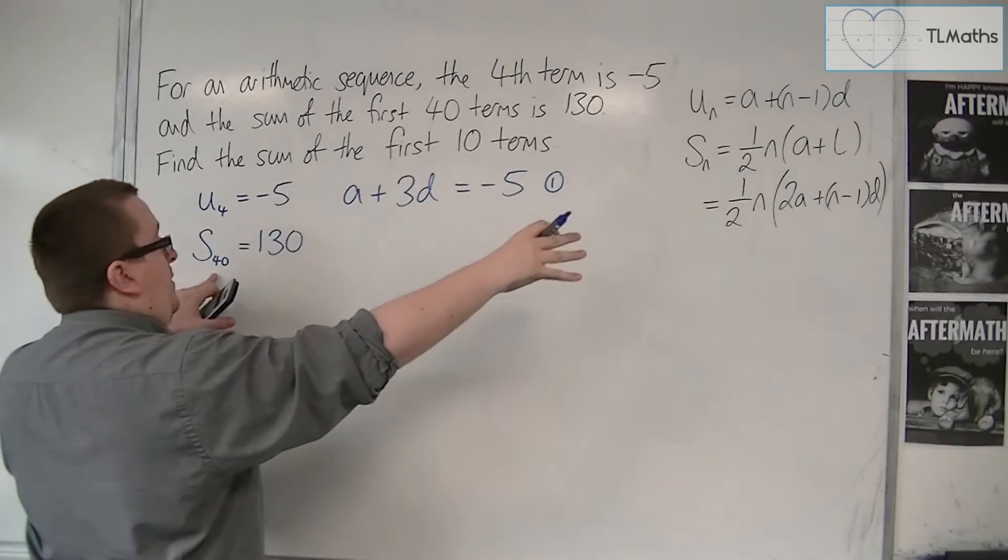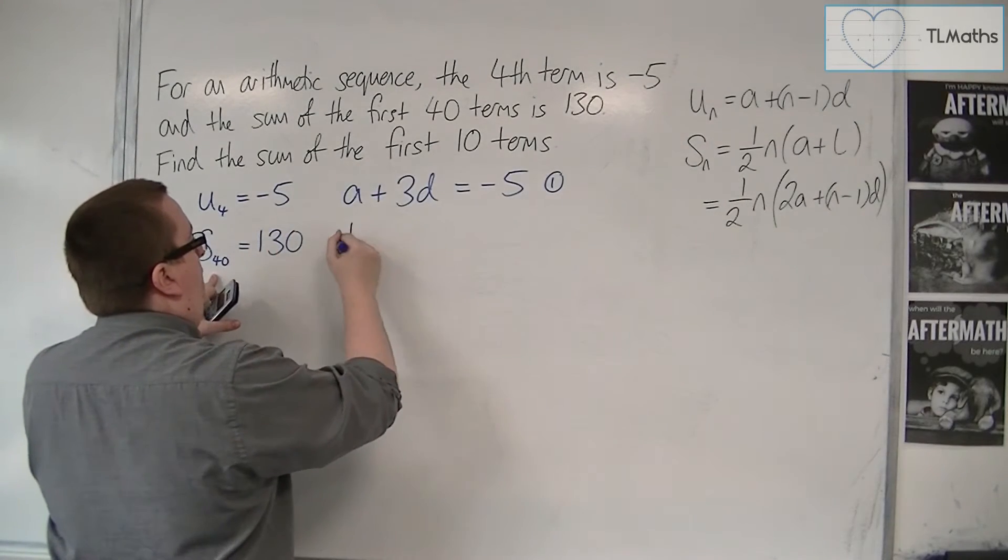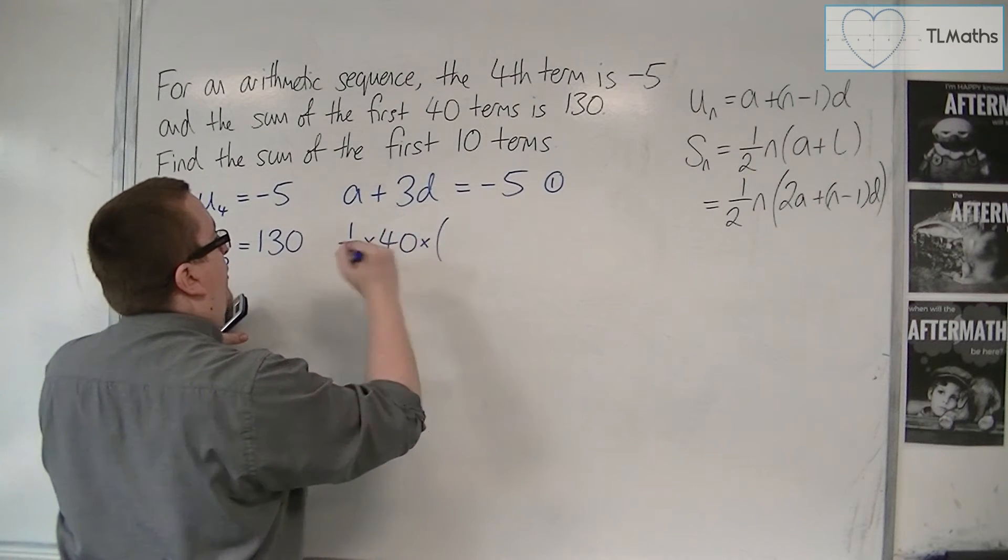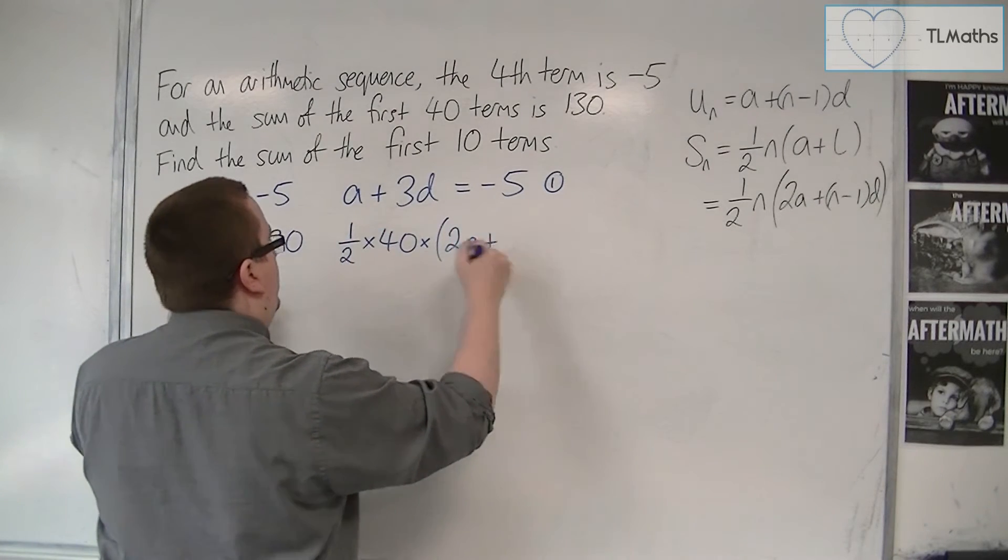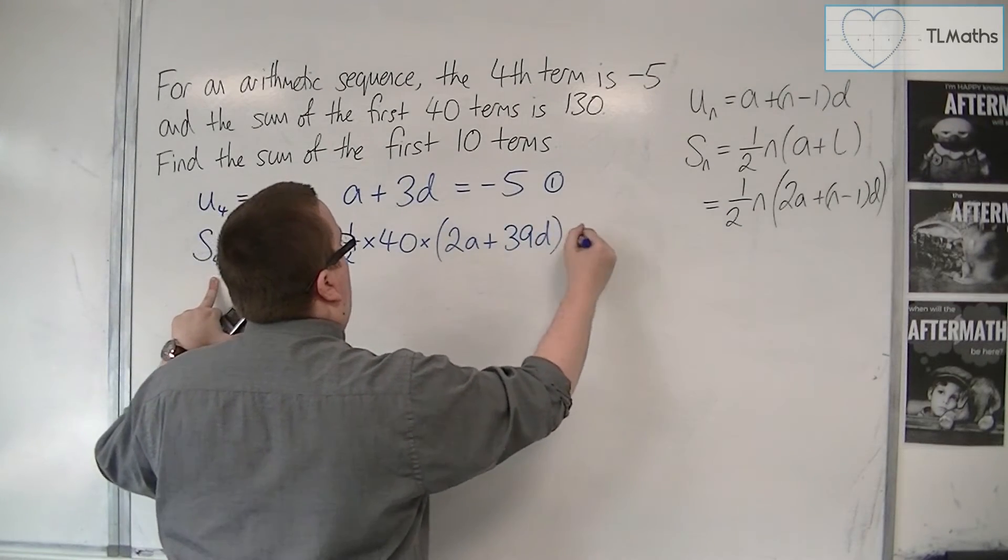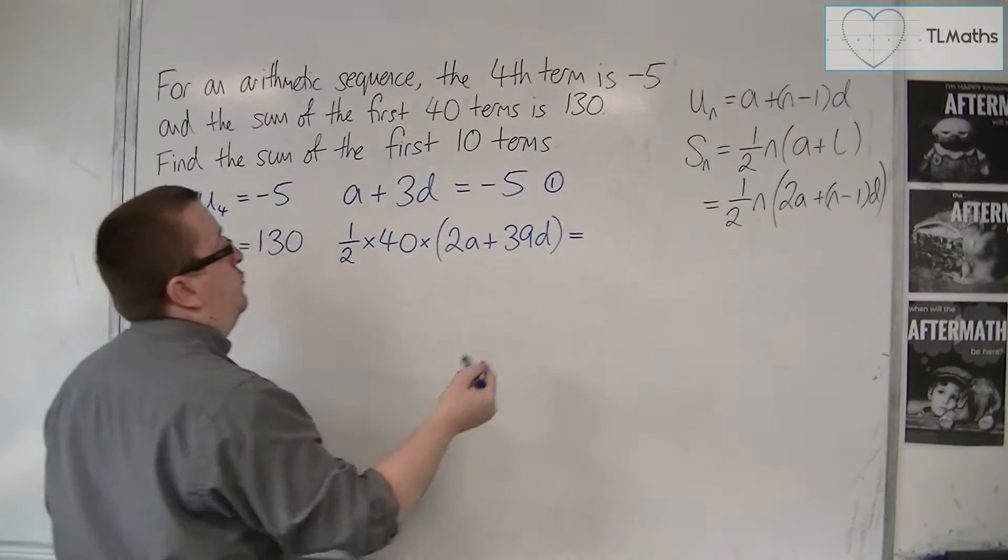So the sum of the first 40 terms is 1 half times n times 2a plus n minus 1, so 39d, and that has got to be equal to 130.